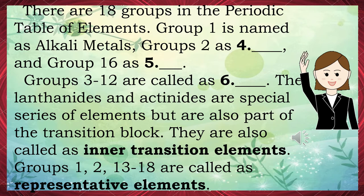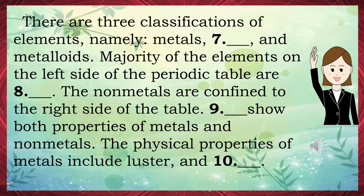There are 18 groups in the periodic table. Group 1 is named alkali metals, group 2 as alkaline earth metals, and group 16 as chalcogens. Groups 3 to 12 are called transition metals. The lanthanides and actinides are special series of elements but also part of the transition block — they are also called inner transition elements. Groups 1, 2, and 13–18 are called representative elements.